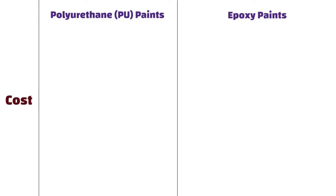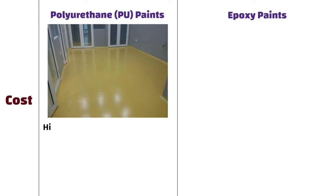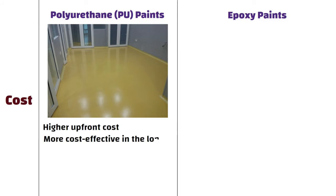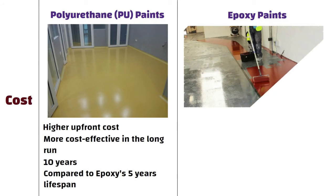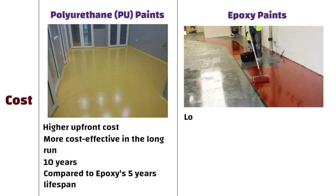Cost. Polyurethane has a higher upfront cost than epoxy, but it becomes more cost-effective in the long run, lasting approximately 10 years, compared to epoxy's 5 year lifespan. Epoxy, on the other hand, has a lower initial cost.